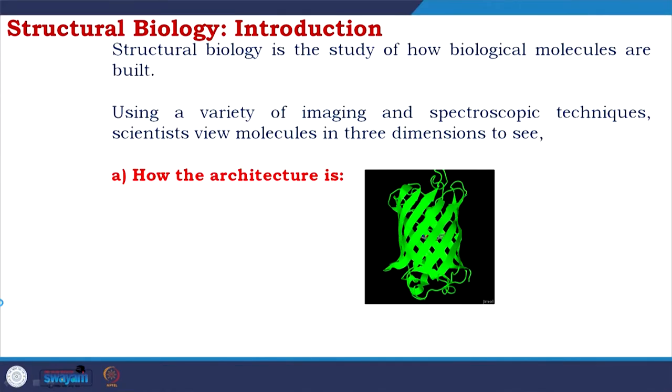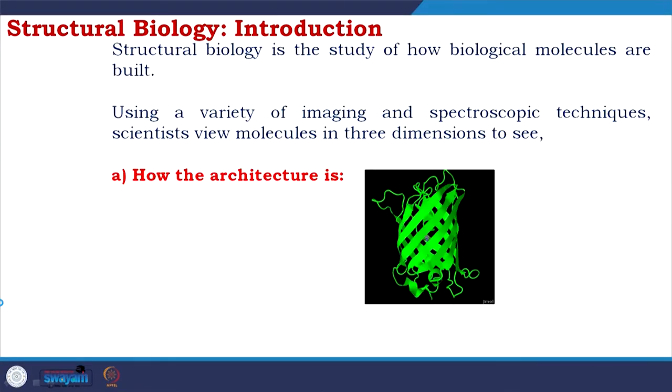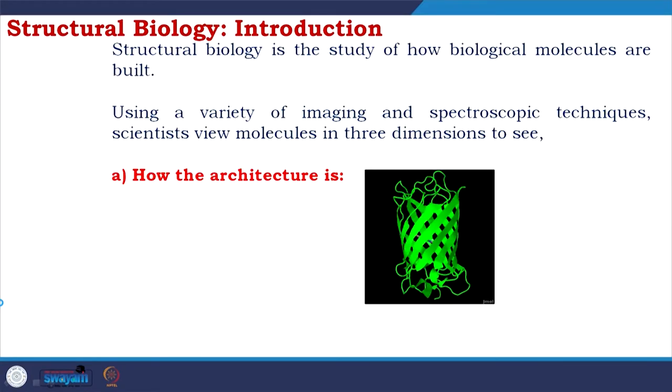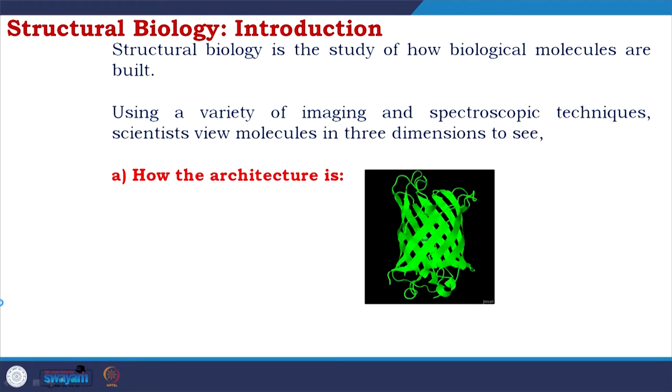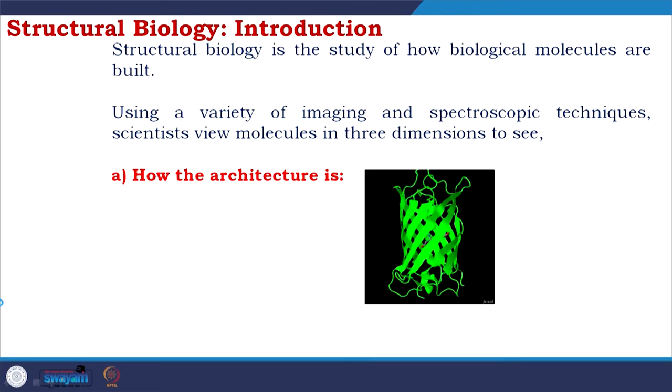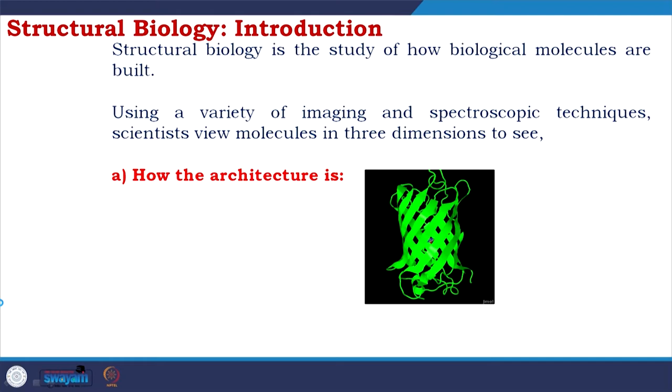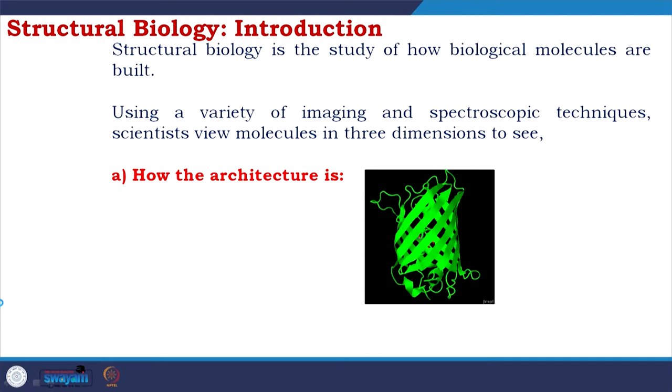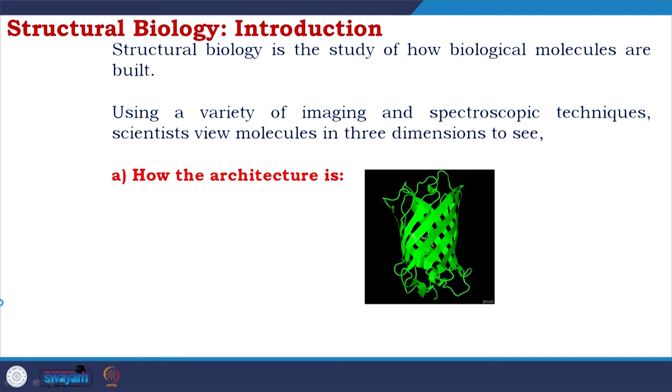When you look at the GFP structure carefully, you will see that there is something inside which is called a fluorophore or chromophore. Because of the generation of that chromophore, green fluorescence protein gives us this green fluorescence which is utilized in fluorescence spectroscopy. How this mechanism works will be discussed in detail in the next part of our lectures.